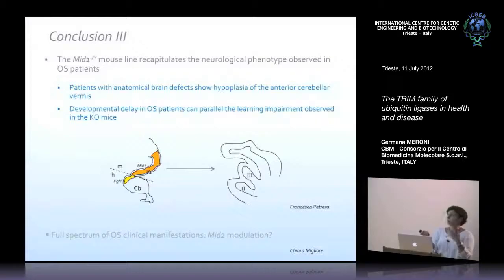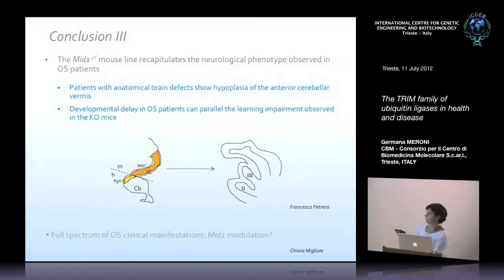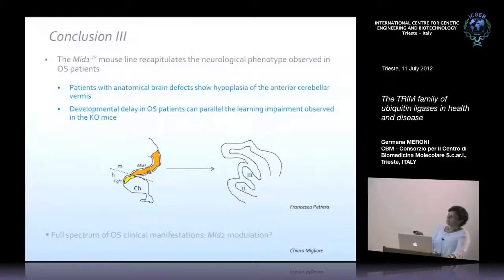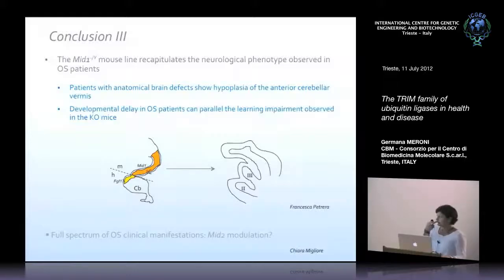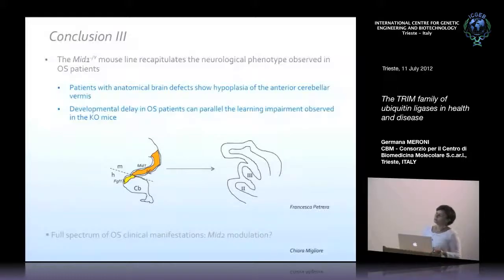We are now trying to understand what causes, from the lack of MID1 expressed mostly in the inferior colliculus at E14.5 stages, the downregulation of FGF17 and subsequent abnormal cerebellar formation. Another major question is why we do not get the full Opitz syndrome spectrum of manifestations. We think this is due to compensation by another Trim gene very close to MID1, which is MID2, and we are now generating a double knockout to study this point.